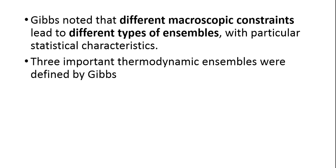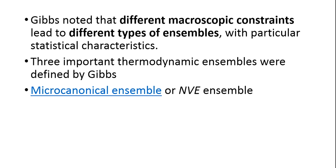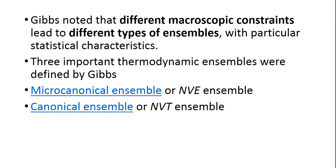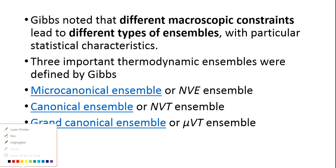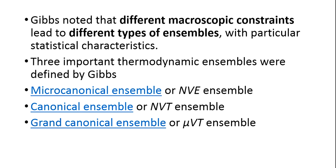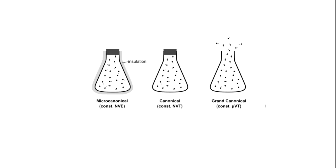The three important thermodynamic ensembles were defined by Gibbs. The first one is the micro canonical ensemble, or NVE ensemble. The second one is the canonical ensemble, or NVT ensemble. Here is a pictorial representation for all three ensembles — micro canonical, canonical, and grand canonical — showing the constants for each.